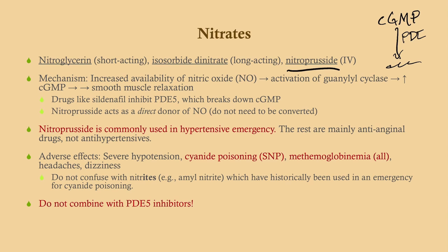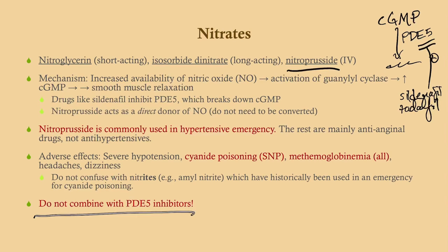Cyclic GMP is broken down by an enzyme called phosphodiesterase 5 (PDE5). PDE5 is inhibited by drugs like sildenafil or tadalafil — drugs used for erectile dysfunction. They work very similarly to nitrates. For that reason, it is very important that you never combine nitrates with a PDE5 inhibitor. You will drop your patient's blood pressure dramatically. So one or the other — not both.